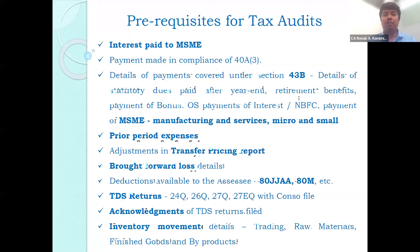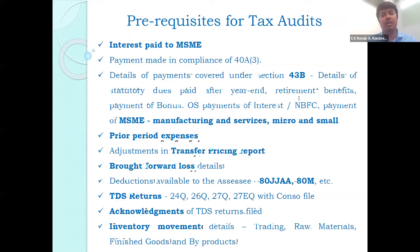Amounts paid under Section 43B include details of statutory dues payable at year end, retirement benefits, payment of bonus, outstanding payment of interest, and interest payments to NBFCs — all covered under Section 43B.